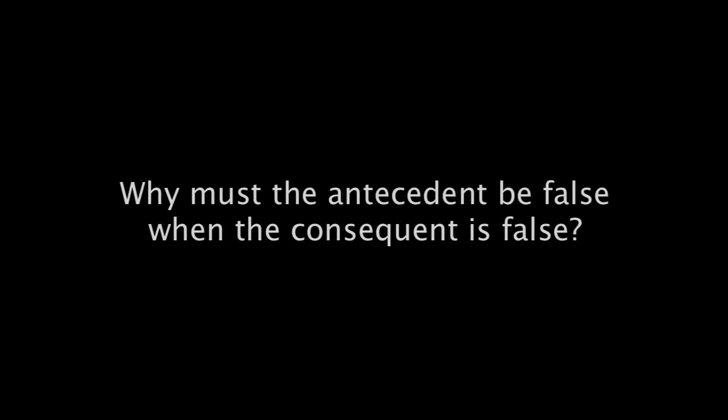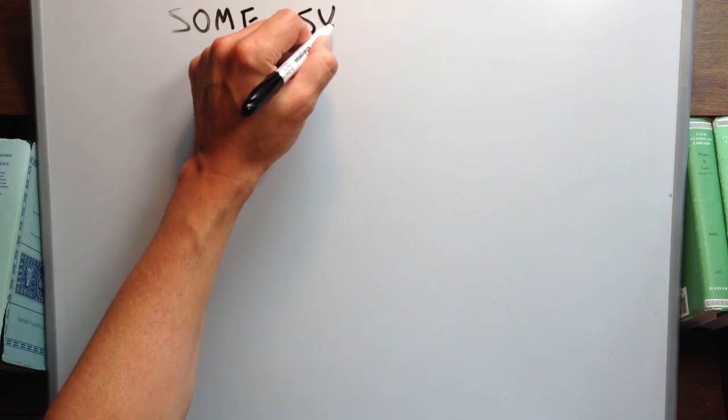It's now time for a question. Why must the antecedent of a conditional be false when the consequent is false? If you said, because the consequent is a necessary condition for the antecedent, you'd be right.